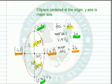And as before, these three variables are connected by the equation: c squared equals a squared minus b squared. So if we know two of these values, we can calculate the third.